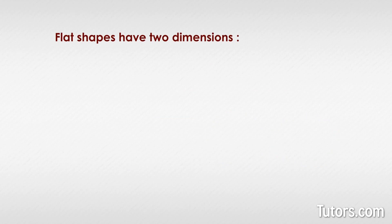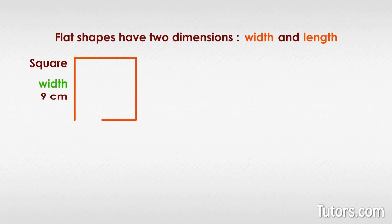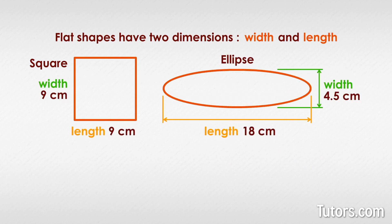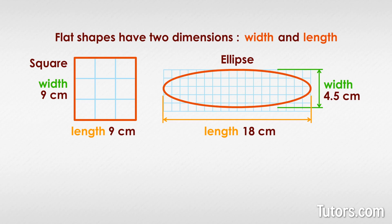Flat shapes have two dimensions: width and length. A square, for instance, has a width equal to its length. An ellipse has width and length too. So we can easily see how the square could be divided into small square units. You may not easily see how an ellipse could be made up of little squares, but it can. Since it has width and length, it covers a space, and that space — even with the curving sides of the ellipse — can be divided into square units.